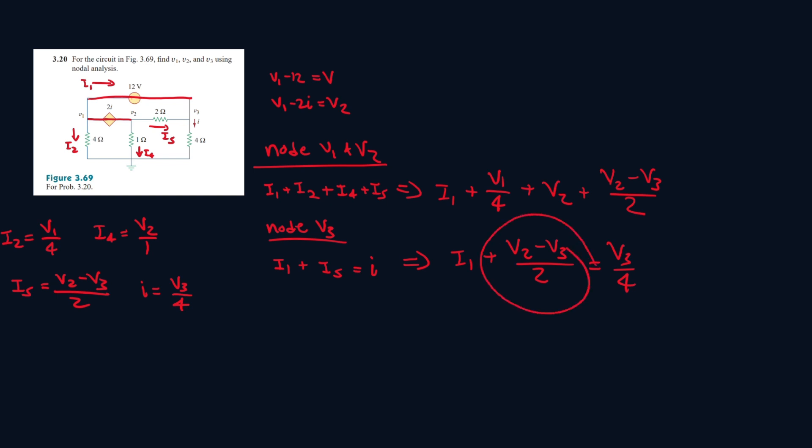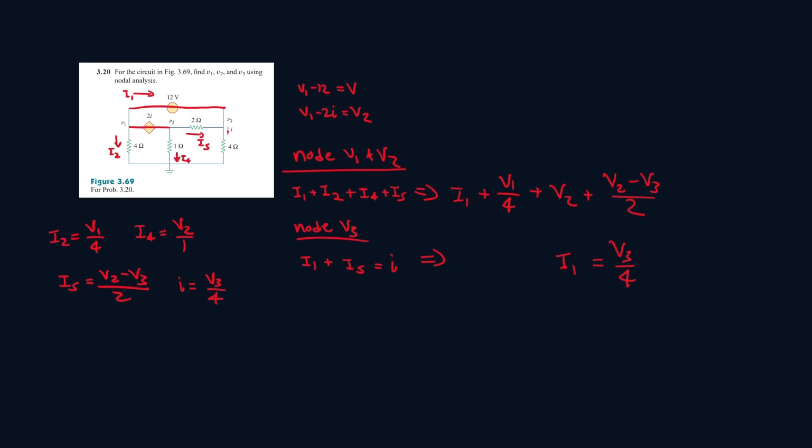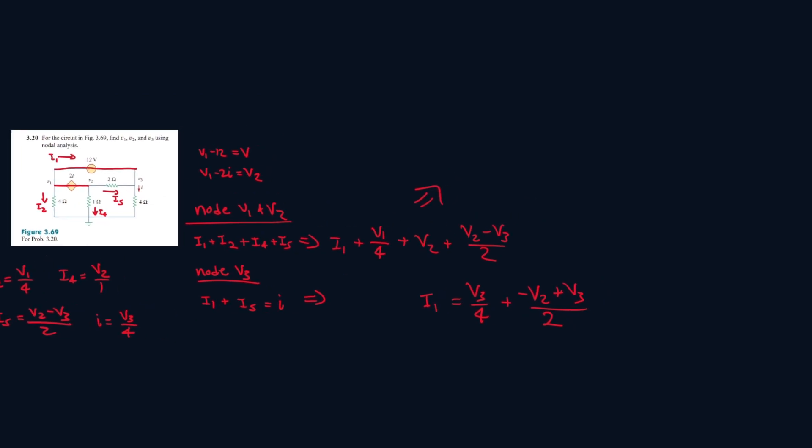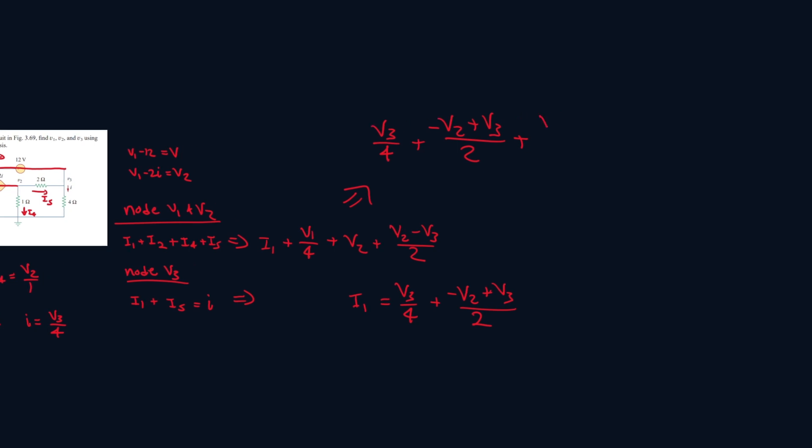Now we can actually bring this to the other side, so to get i1 alone. So i1 is equal to minus v2 plus v3 all over 2. And we can plug that into here. So we can write one giant equation, and this giant equation will look like this. So v3 over 4 plus minus v2 plus v3 all over 2 plus v1 over 4 plus v2 plus v2 minus v3 all over 2.